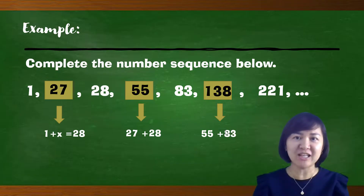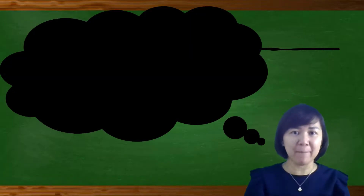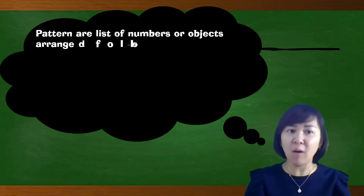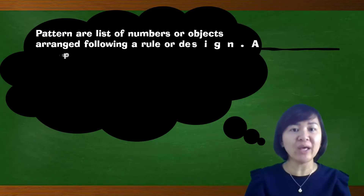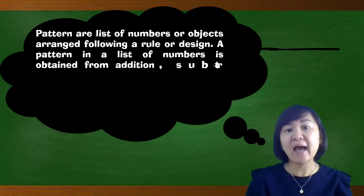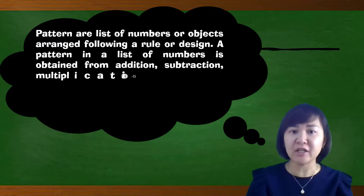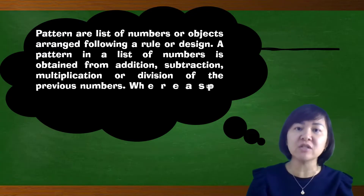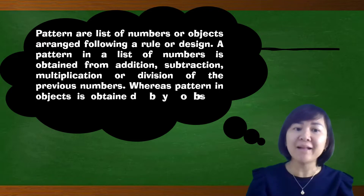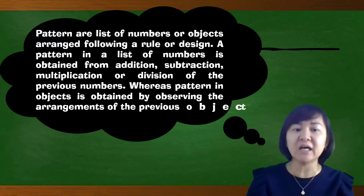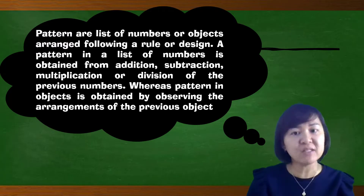Everyone can understand and complete all the sequences using the rule of Fibonacci numbers. After looking at so many examples, we can conclude that patterns are a list of numbers or objects arranged following a rule or design. A pattern in a list of numbers is obtained from addition, subtraction, multiplication, or division of the previous number, whereas a pattern in objects is obtained by observing the arrangement of the previous object.